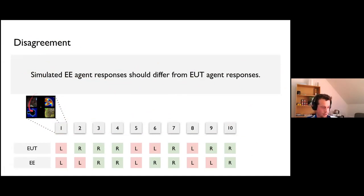Using that simple idea, we can introduce the measure of disagreement. It's based on the simple heuristic that simulated responses from the ergodicity economics agents should differ from the expected utility theory agent responses. If we simulate both agents, the response to the same sequence of stimuli should be different. Here we get some experimental design consisting of, let's say, 10 trials. Each trial consists of two gambles. We simulate the EUT responses and the EE response and just calculate the probability or the frequency of the disagreement, when one agent chose left and the other chose right.